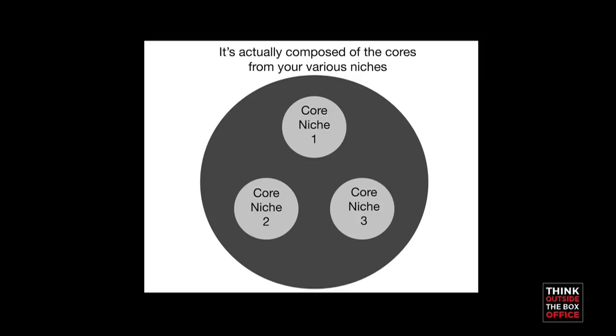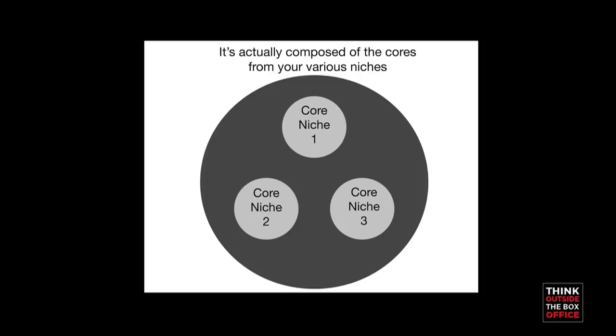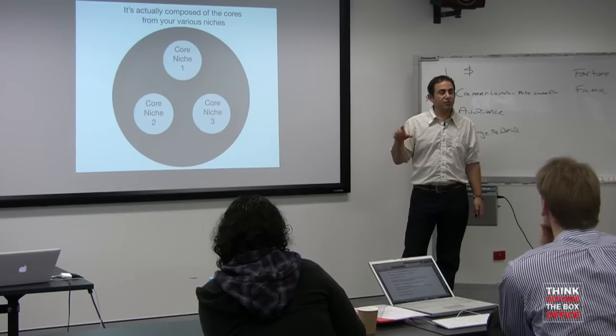So say you have three, and I'm going to show this by example. If you have three separate niche audiences, each of those will have a core and then each of those comprise the core audience for your film.